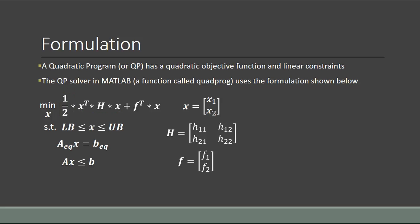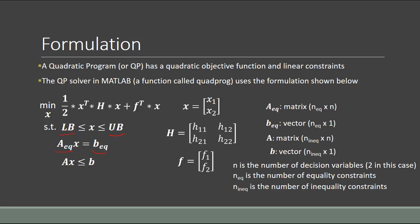Our constraints need to be in this form. We define a vector called LB, the same size as x, containing the lower bound for each decision variable. Similarly, a vector called UB defines the upper bound. For equality constraints, we define them using matrix A-sub-EQ and vector B-sub-EQ. The matrix A-sub-EQ has as many rows as equality constraints and as many columns as decision variables. The B-sub-EQ vector has as many entries as equality constraints, but is only one column — it's a vector.